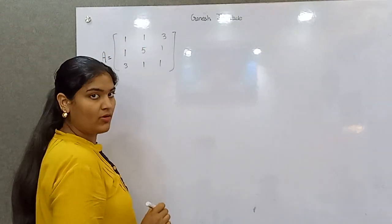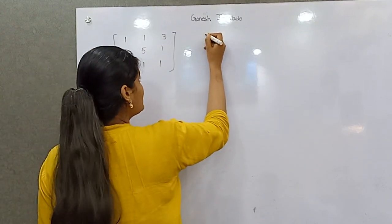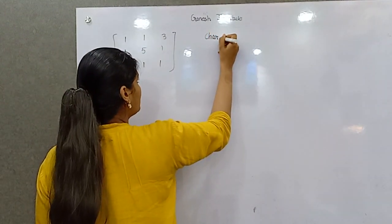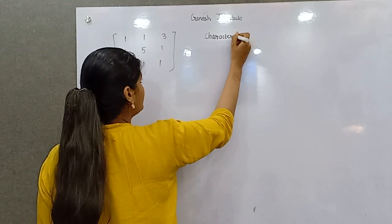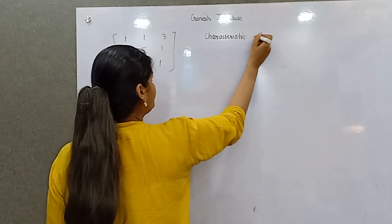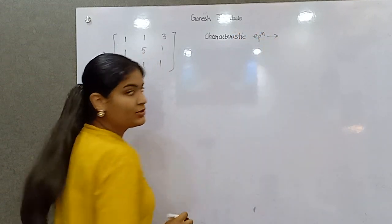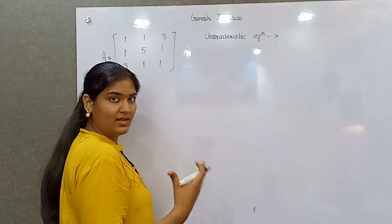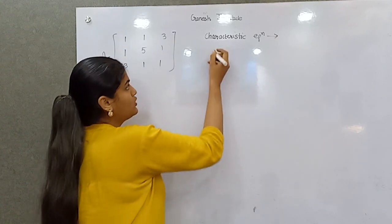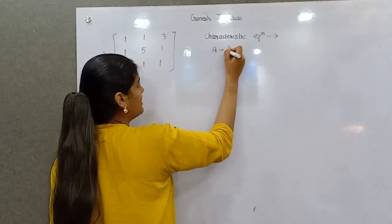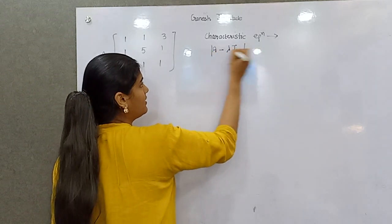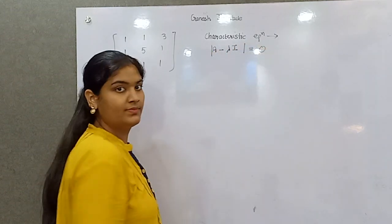Let's say this is your matrix A. Your characteristic equation will be, let's say lambda is the eigenvalue, so A minus lambda I determinant should be 0.